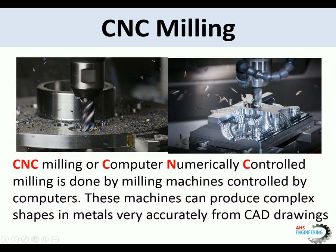CNC milling, or computer numerically controlled milling, is done by milling machines controlled by computers. These machines can produce complex shapes in metals very accurately, usually straight from CAD drawings. Here's some CNC milling.